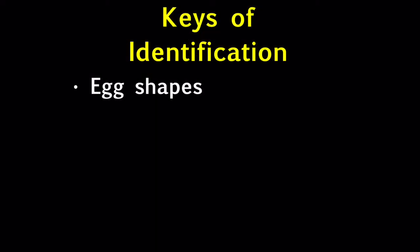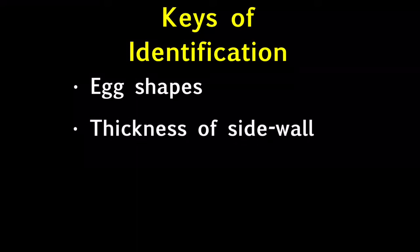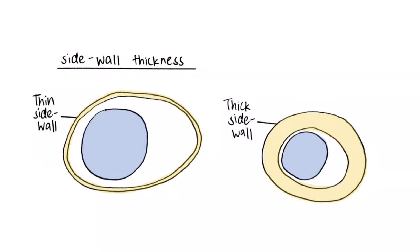Secondly, we can also look out for the thickness of the sidewall. Thin sidewalls can be found in hookworm eggs, while thick sidewalls can be found in roundworm, tapeworm and whipworm eggs.